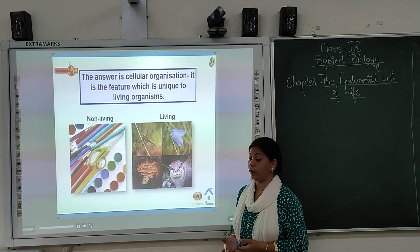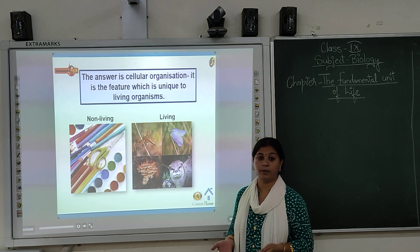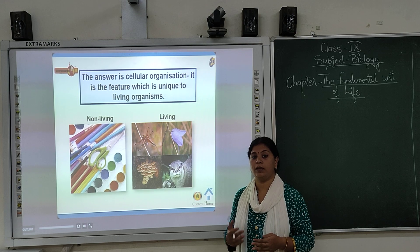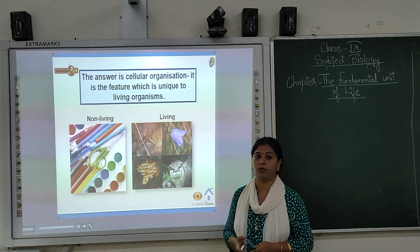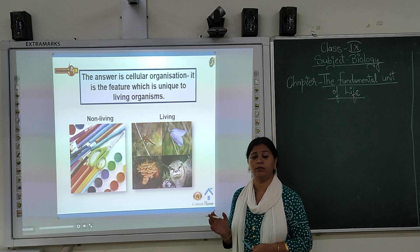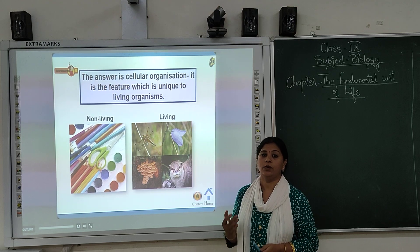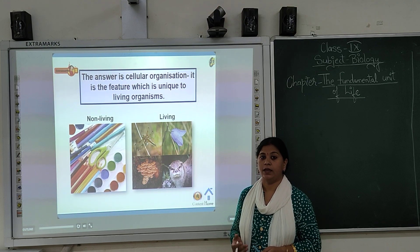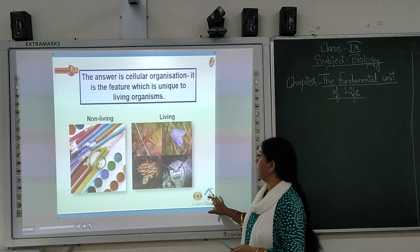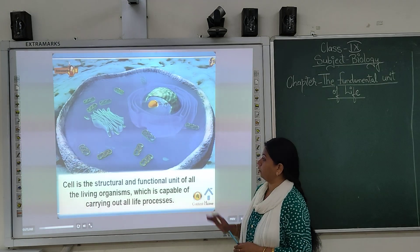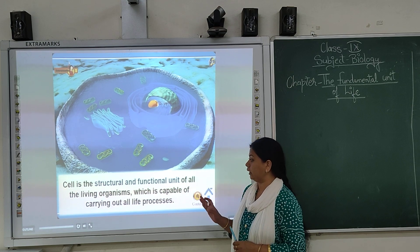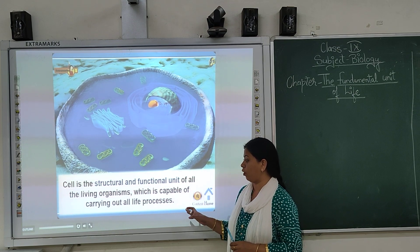In cellular organization, cells are present, tissue is present, organs are present, and cells carry out different types of reactions. These are the main important components of the cell. The cell is the structural and functional unit of all living organisms, which carries out all life processes.